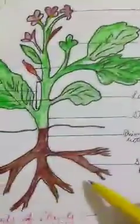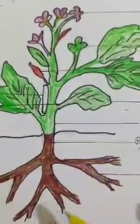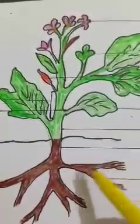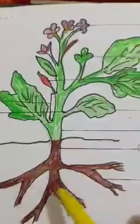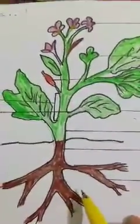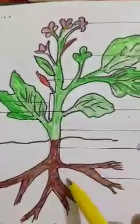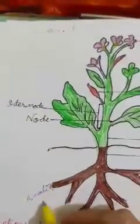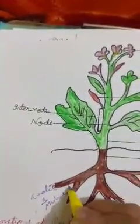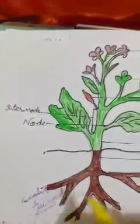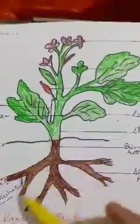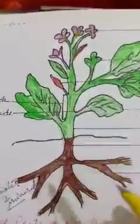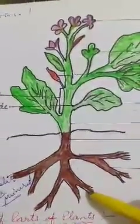The last part of the plant is the roots. Roots are the part that grows under the ground. Roots hold the soil firmly and anchor the plant — they fix the plant in the soil. The main function of the root is to absorb water and minerals from the soil. In some plants like carrot and radish, roots also store food for us.